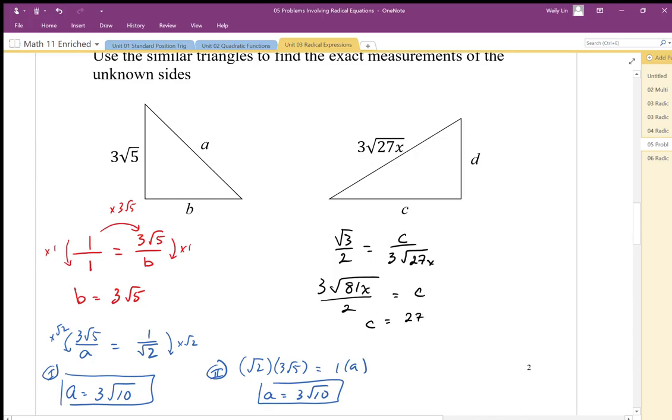So I factor out the 9, multiply it times 3. I'm left with x, and all over 2. So there's my value for C.